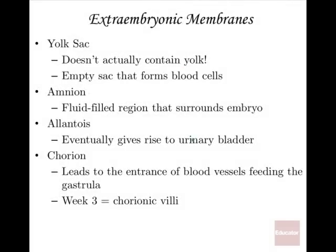The trophoblast cells become different extra-embryonic membranes outside the embryo itself. The yolk sac — though we're not birds or reptiles — is thought by evolutionary biologists to be a remnant from our ancestors. In humans it's not filled with yolk, but it helps give rise to blood cells that will eventually receive oxygen from the mother through the placenta.